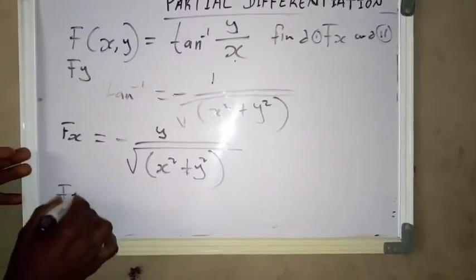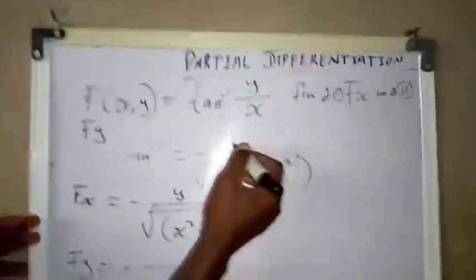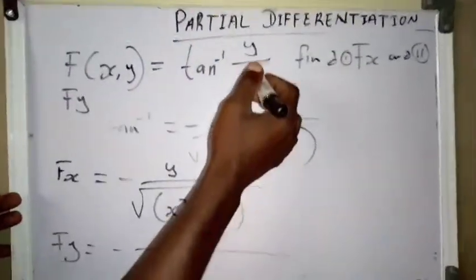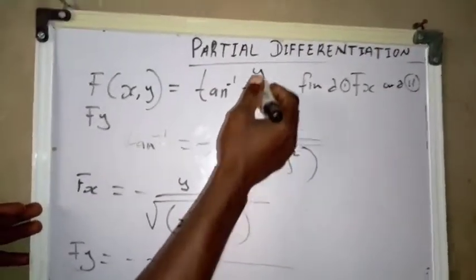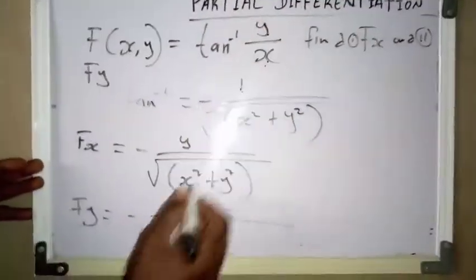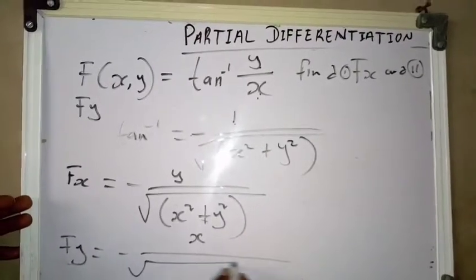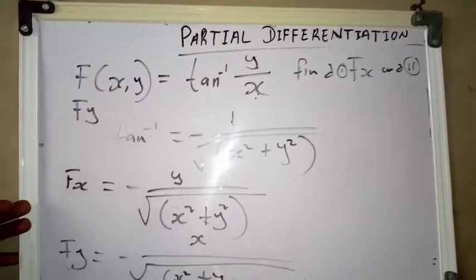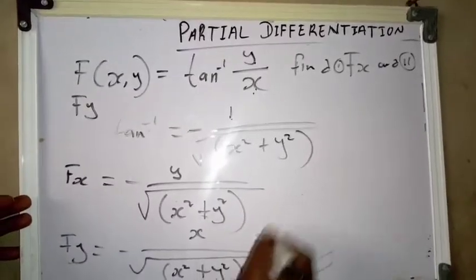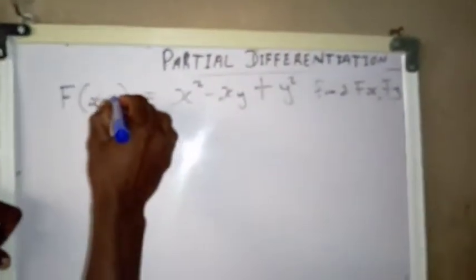For f_y, we replace the variable with x. Our f_y equals minus x divided by the square root of x squared plus y squared. This is our answer for this example.